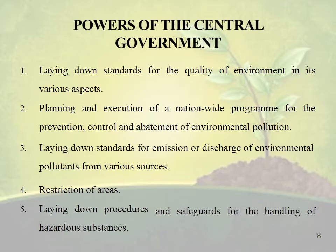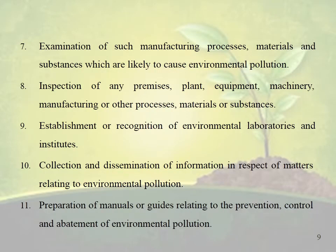Then we can move on to the powers of the Central Government: laying down standards for the quality of environment in its various aspects, planning and execution of a nationwide program for the prevention, control and abatement of environmental pollution, laying down standards for emission or discharge of environmental pollutants from various sources, restrictions of areas, laying down procedures and safeguards for the handling of hazardous substances, examination of manufacturing processes, materials and substances likely to cause environmental pollution, inspection of any premises, plant, equipment, machinery, manufacturing or other processes, materials and substances, establishment or recognition of environmental laboratories and institutes, and collection and dissemination of information in respect of matters relating to environmental pollution.